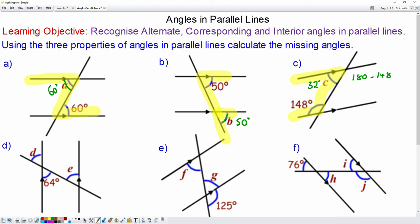For question d, you can see that d and the 64 are vertically opposite, which means they are equal. So d will be 64 degrees. And d and e are in an f shape, which means that they are corresponding. So again they will be equal, so e will be 64 degrees.